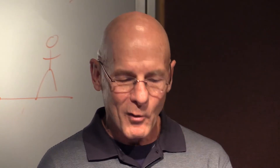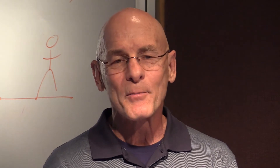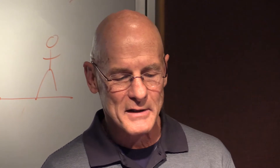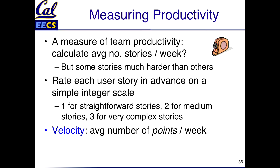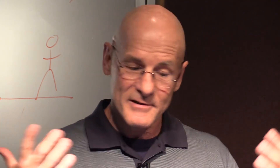Instead of just counting user stories, we'll count points, and the team will make up the points per user story. Velocity is just the average number of points a team completes per week. The simple beauty of the system is you come up with points for your team, estimate your stories, and figure out how many points you complete per week. Then using your historical average, you can estimate how long it'll take to finish the remaining user stories.